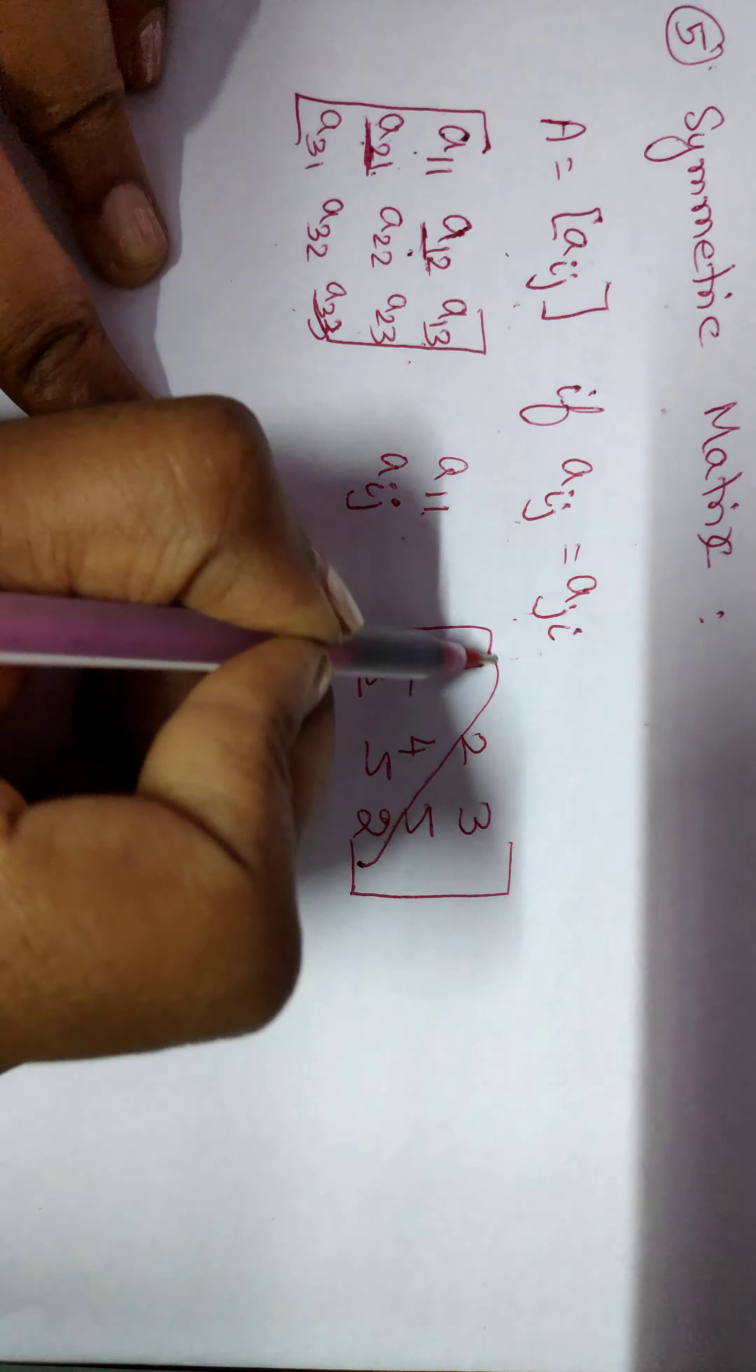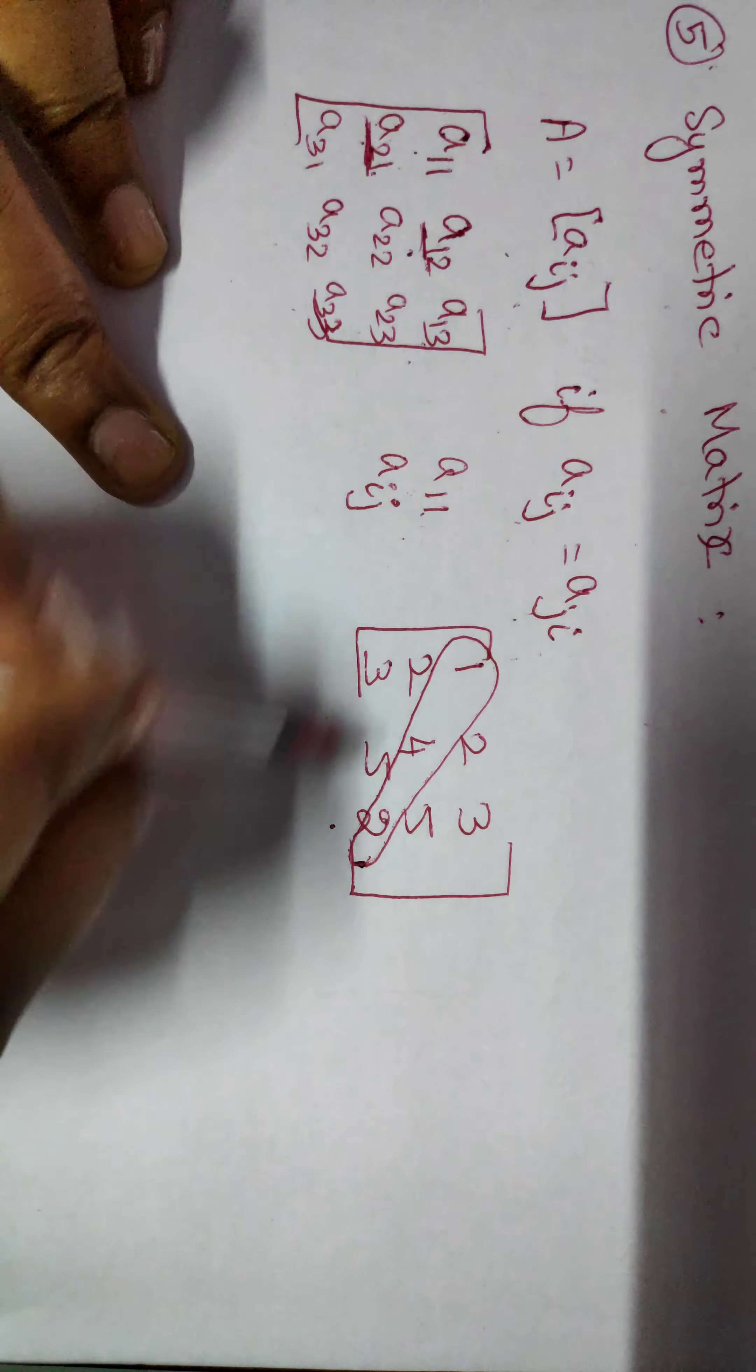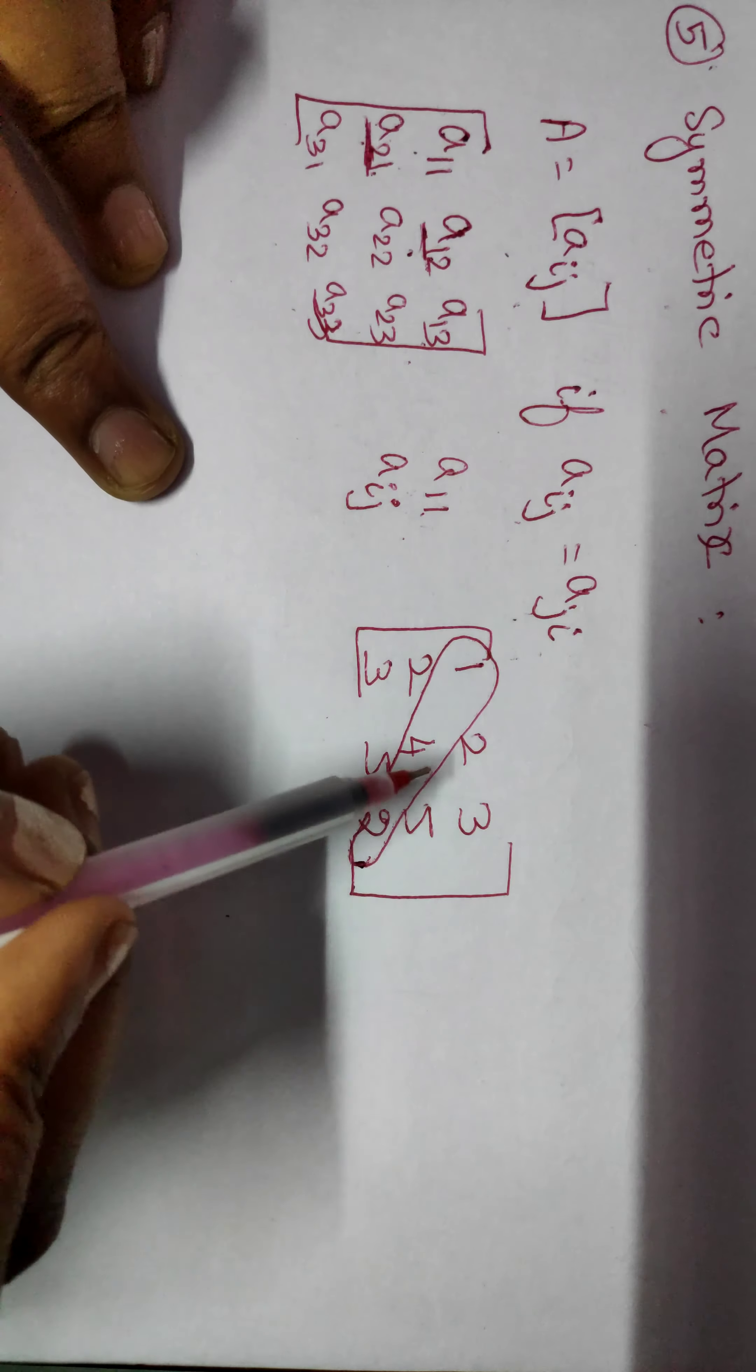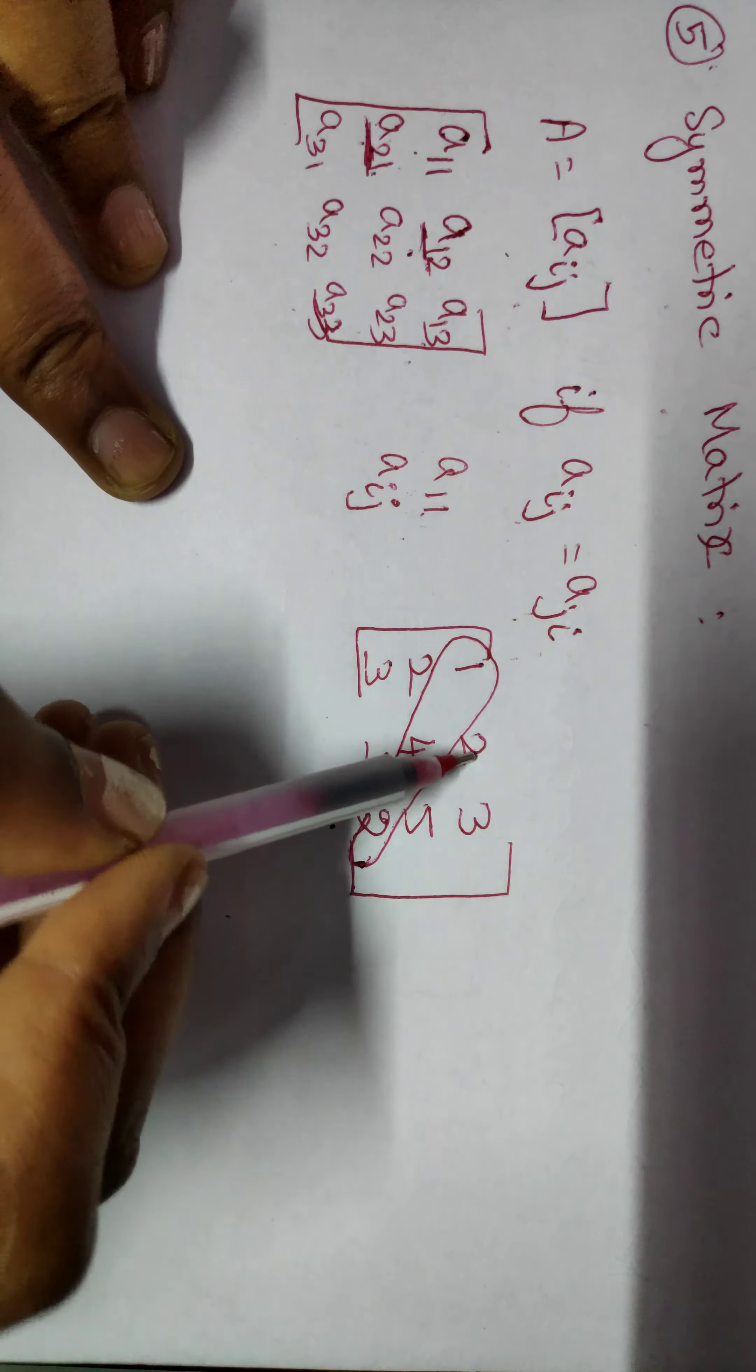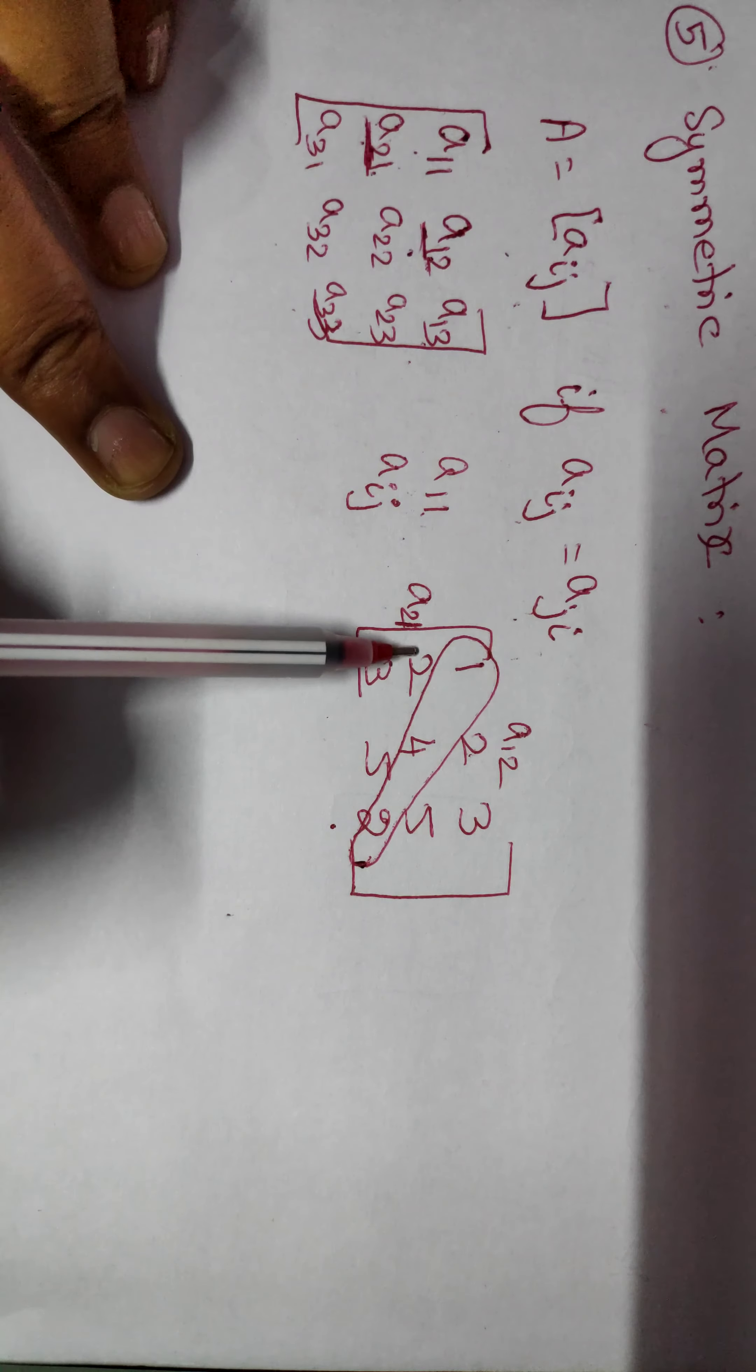Apart from diagonal elements, this is our diagonal element. This value is A12, this value is A21. This A12 and A21 value is same.